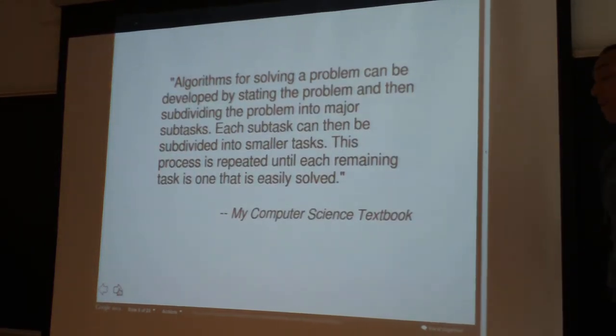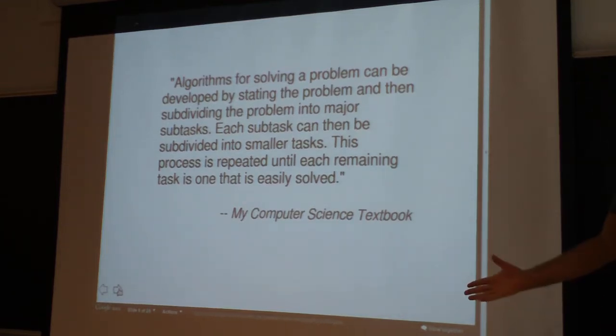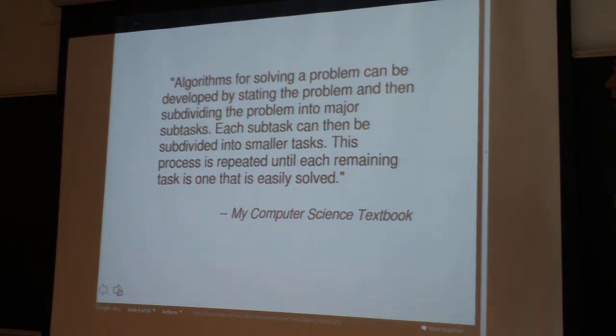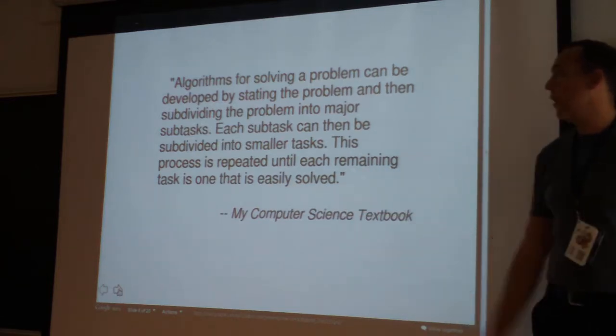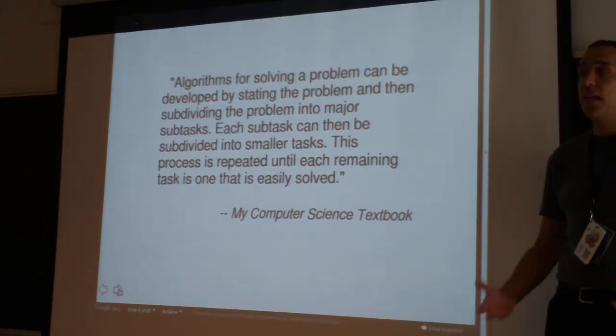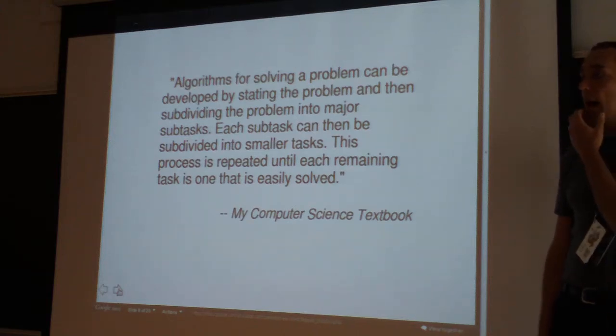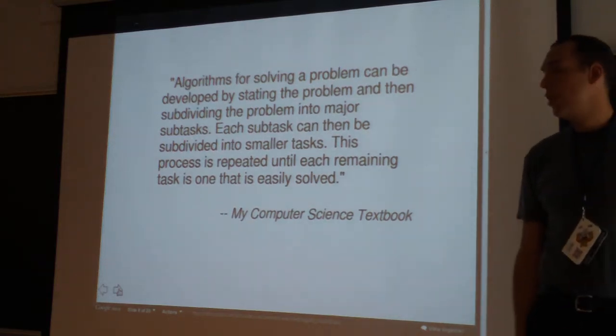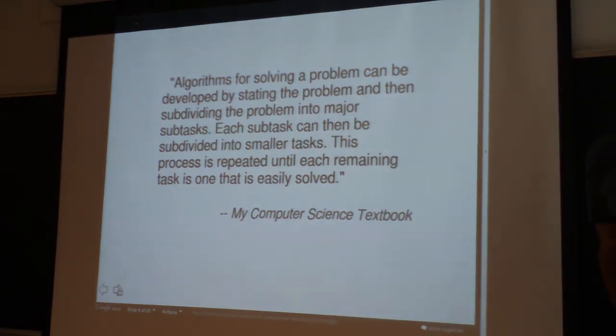My computer science textbook says this should be pretty easy. Algorithms for solving a problem can be developed by stating the problem and then subdividing the problem into major subtasks. This process is repeated until each remaining task is easily solved. I like the word estimable instead. Until each task is estimable by your developers. This is the definition of top-down design. But in practice, it's really difficult.